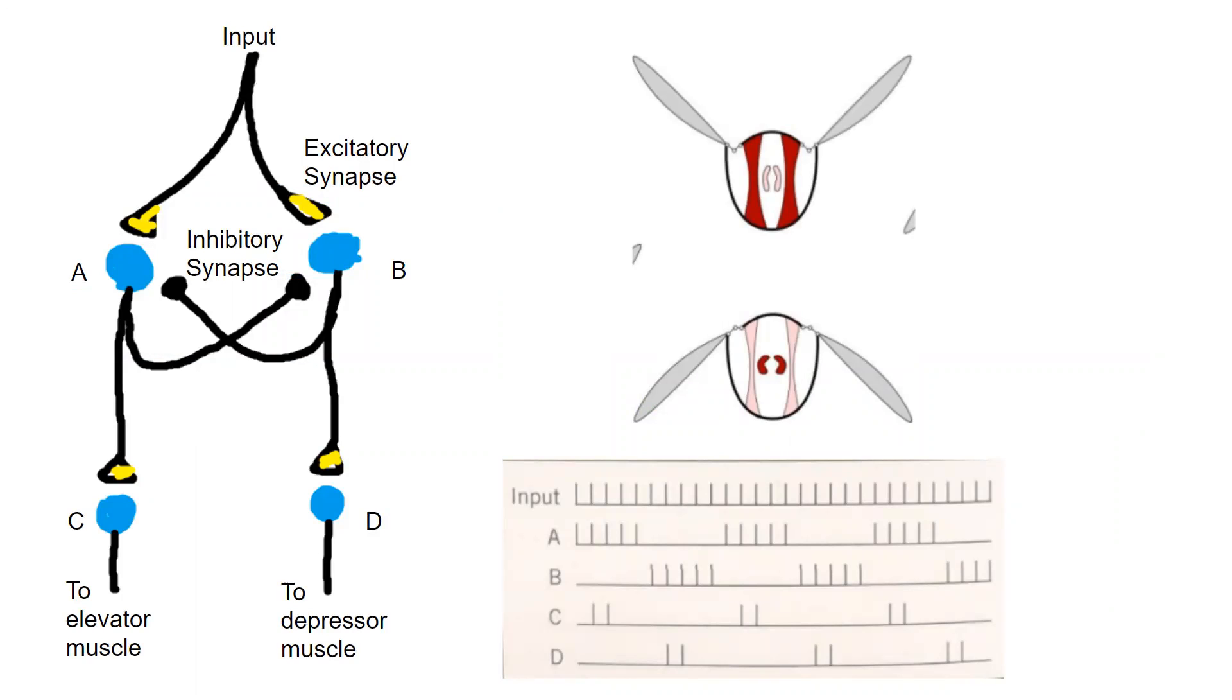So here's a really simple CPG and it starts with an input, like an action potential. And it has an excitatory synapse on both of these. It's connecting to two different neurons. And then over here, we have an inhibitory synapse.